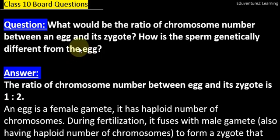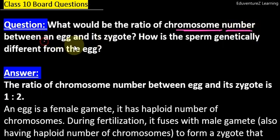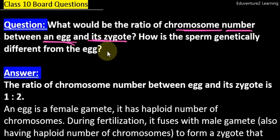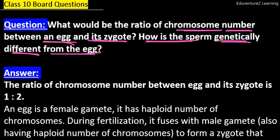Hello students, welcome to video lectures learning. Today's question is: what would be the ratio of chromosome number between an egg and its zygote? How many chromosomes will be there in an egg and a zygote when the ratio is checked? How is the sperm genetically different from the egg? How are sperms and eggs genetically different from each other, and what are the differences between sperm and egg?